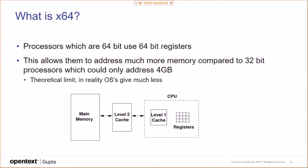What is X64? Processors which are 64-bit use 64-bit registers, and this allows them to address much more memory compared to 32-bit processors, which could only address 4 GB. That's the theoretical limit — in reality, the OS gives much less. But with TeamDeveloper 64, you have the ability to allocate a lot more memory for your variables. If you had memory problems, then you need to go to 64-bit.